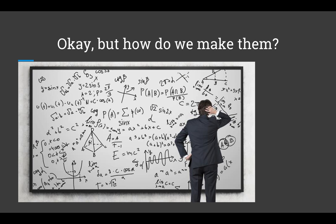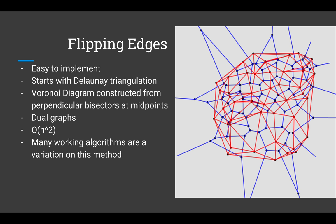Okay, but how do we make them? The easiest way to create a Voronoi diagram is to first create the Delaunay triangulation, then draw perpendicular bisectors at each edge midpoint to create the Voronoi diagram. A lot of algorithms do this. The big O is O(N²), which is okay.